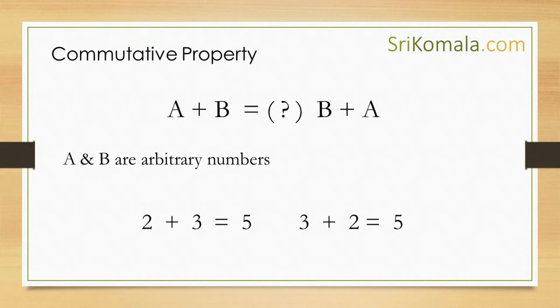We have already known that 2 plus 3 is equal to 3 plus 2. Both are 5. This property is called the commutative property.